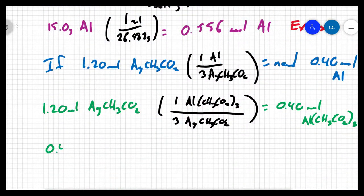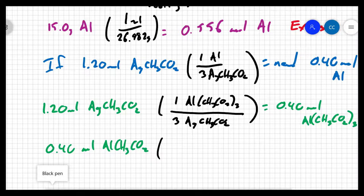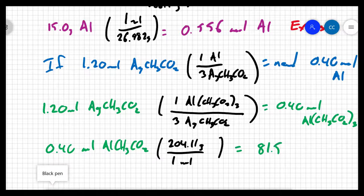The question was asking what mass of aluminum acetate. So I can take my 0.40 moles of aluminum acetate and multiply it by the molar mass, which for aluminum acetate is 204.11 grams per mole. So I end up with 81.5 grams of my aluminum acetate.